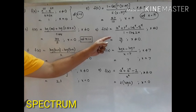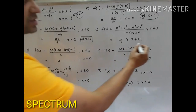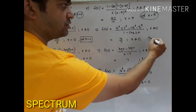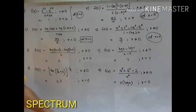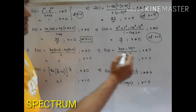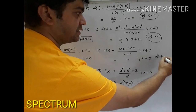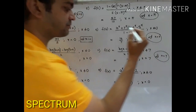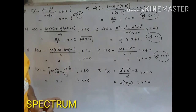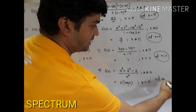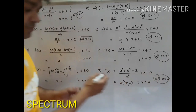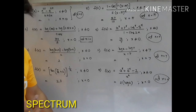Here once again is a very important question asking us to discuss the continuity of this particular function at x equal to 0. Another very important question asks us to discuss continuity at x equal to 7. Here again they ask us to examine or check the continuity of this function at x equal to 0. So this is type 1, where a function is given and you discuss continuity at a point.